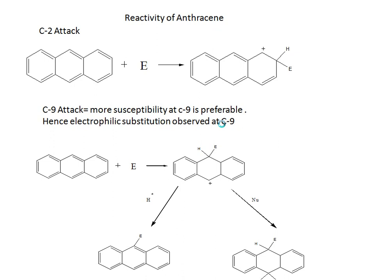We will discuss the reactivity of anthracene. There are two possible attack sites: C2 and C9. Attaching the electrophile at the C2 (beta) position gives a less stable compound, while attaching it at C9 gives the stable compound. Therefore, electrophilic substitution occurs preferentially at the C9 position. The electrophile reacts to form a compound with a positive site; if a proton is removed, the stable substituted product is obtained; if the proton is not removed, a nucleophile attaches to give the addition product.